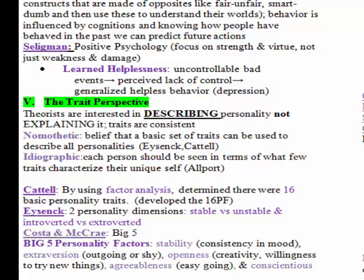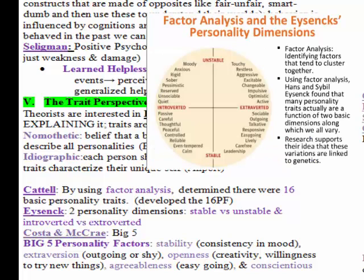Cattell used factor analysis and determined there were 16 basic personality traits, then developed an inventory to assess those. Eysenck said there are two personality dimensions. In your textbook there's a graphic that looks like a circle divided into four quadrants, falling along the lines of stable versus unstable and introverted versus extroverted.